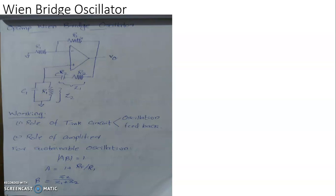That concludes bandpass and band reject filters. One more topic in the syllabus is the op-amp narrow bandpass filter with multiple feedback, which is included in view of practical experiments. I recommend submitting this as an assignment. You can refer to this in Electronics and Integrated Circuits by op-amps and Linear Integrated Circuits by R. A. Gayakwad. Now let's move on to the next topic.